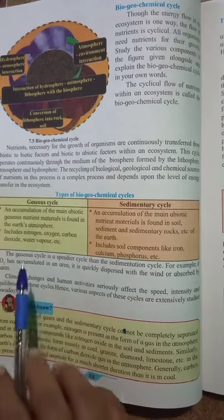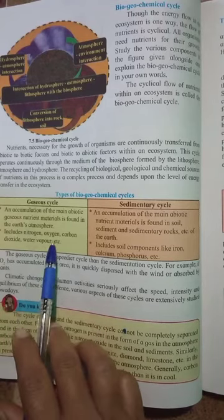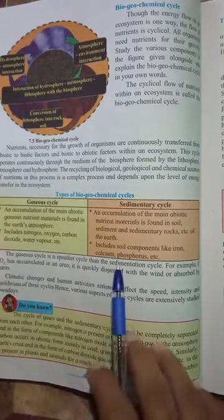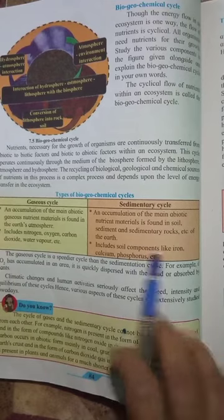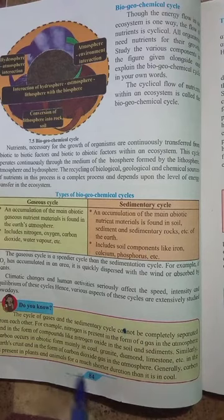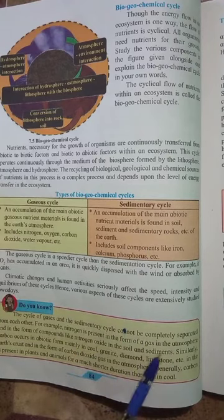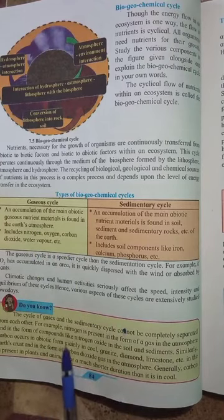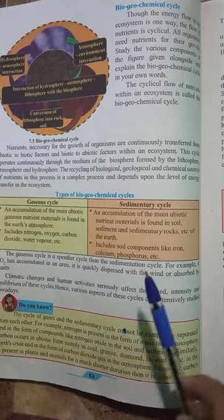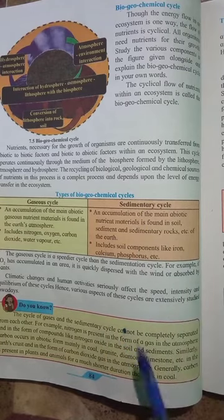So we have seen that the examples of nitrogen, oxygen, carbon dioxide, and water vapor are included in the gaseous cycle. Iron, calcium, and phosphorus are included in the sedimentary cycle. Nitrogen is present in the form of gas in the atmosphere — that is the gaseous cycle — but the compound nitrogen oxide is present in the soil, so it comes under the sedimentary cycle.